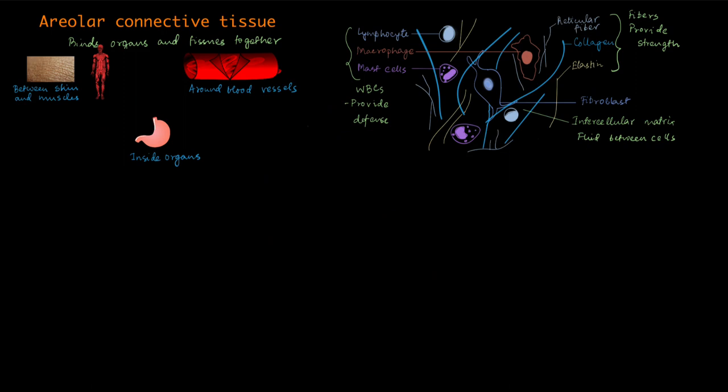So we have seen what areolar connective tissue is. We have seen where they are found. We have looked at the different types of cells and other things that are found inside the areolar connective tissue and explored what their different functions are.